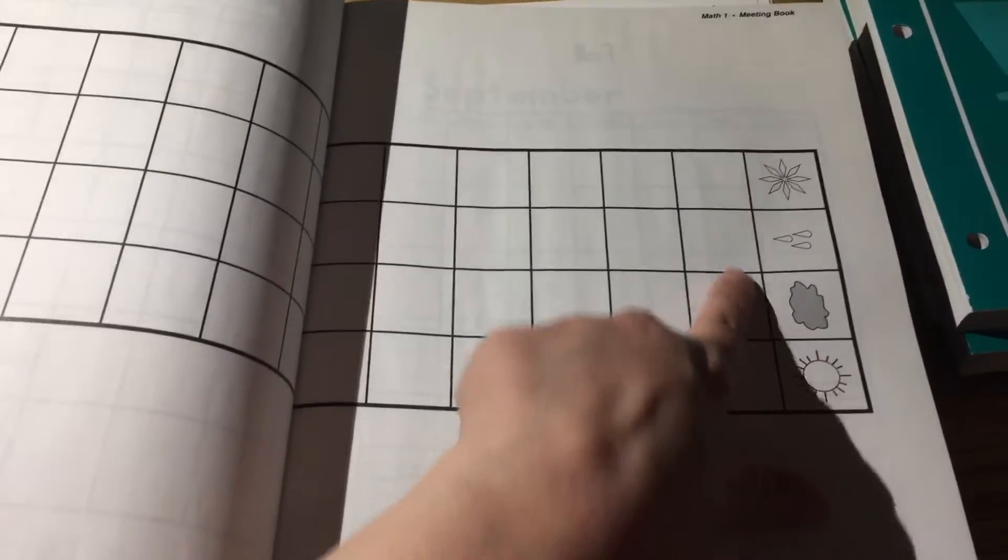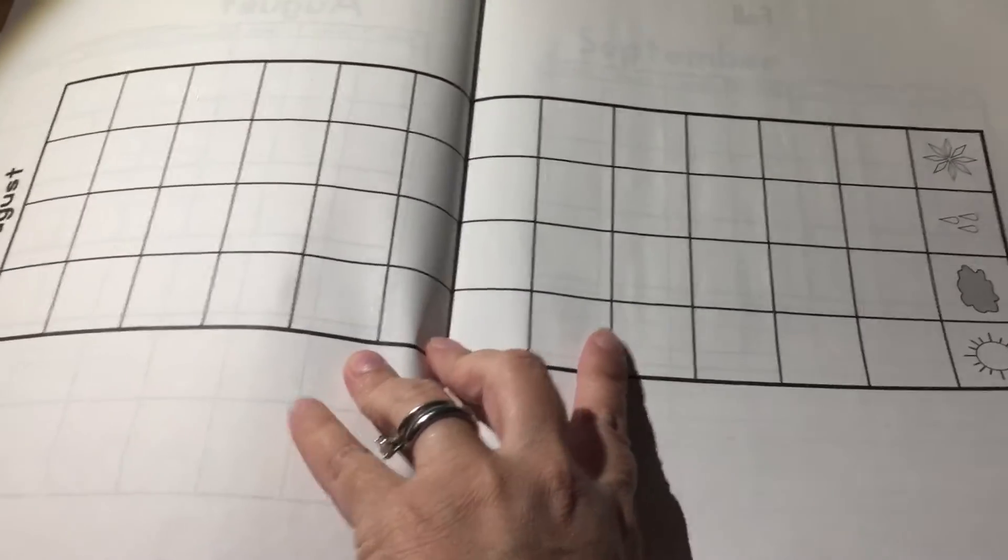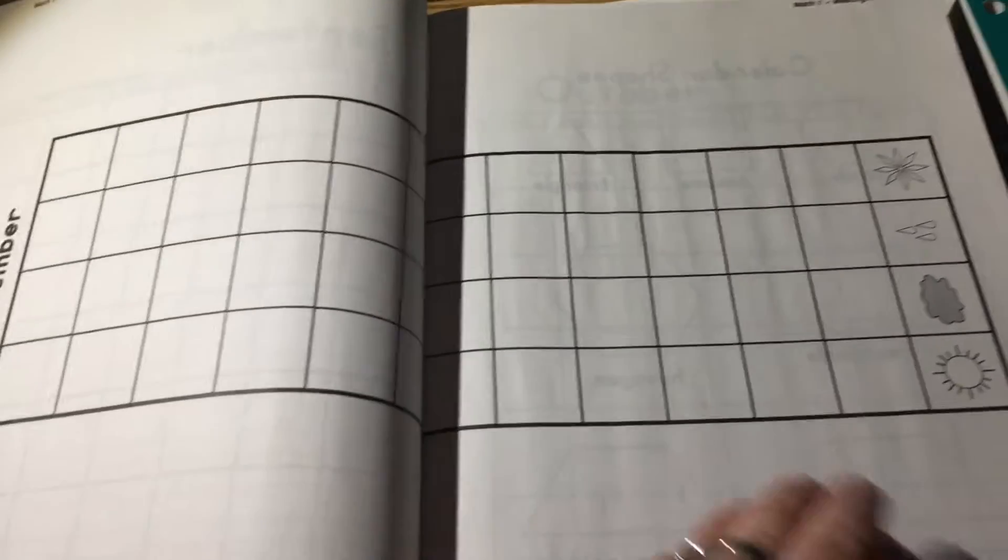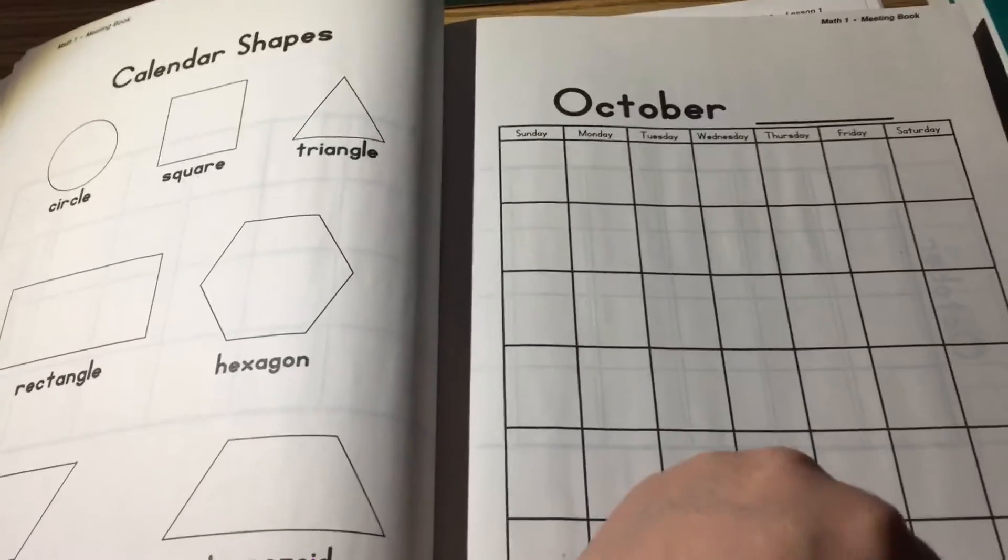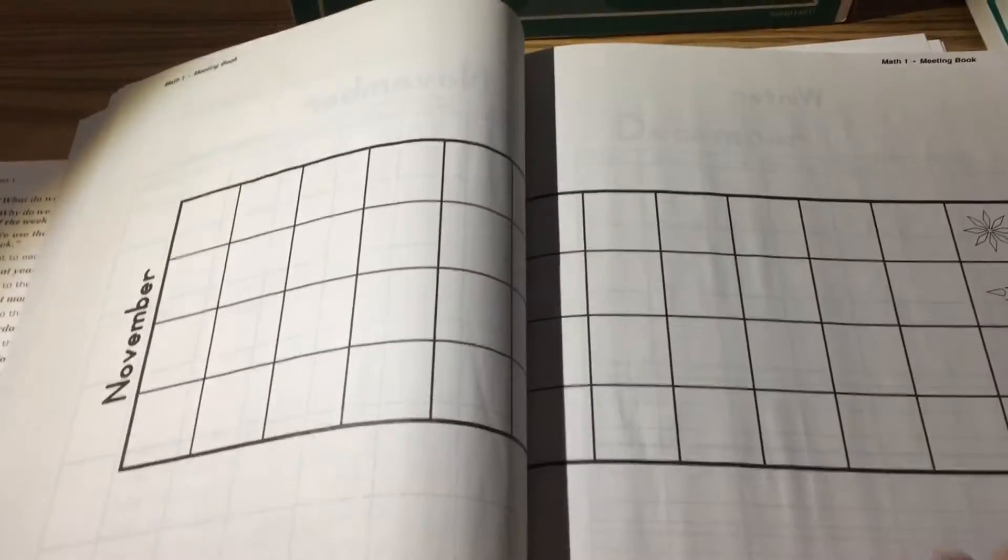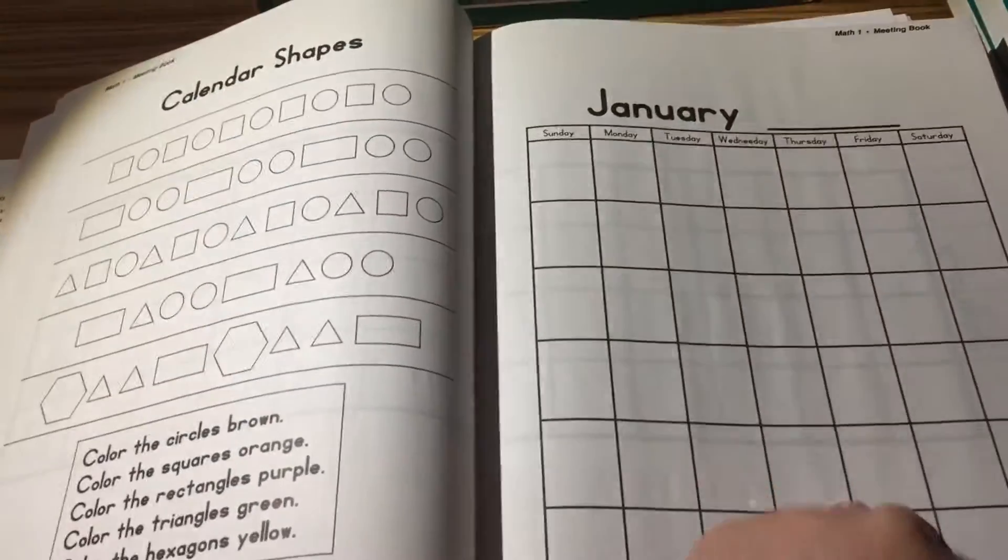So sunny, cloudy, rainy and snowy and this is graphing. Then you're going to have a draw illustrate page for the fall. Then it goes to the September calendar. Same thing. Weather chart. Some shapes. October calendar. Weather chart. Shapes again. November. Weather chart. Draw illustrate. December. And it goes on and on like this.